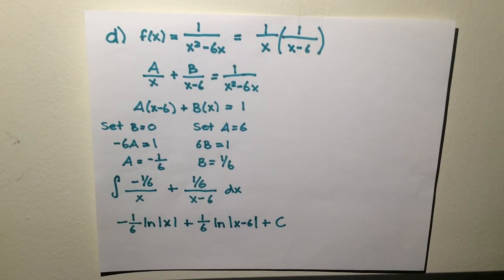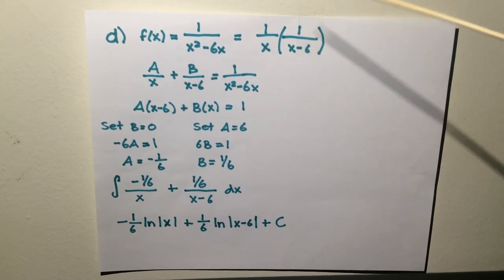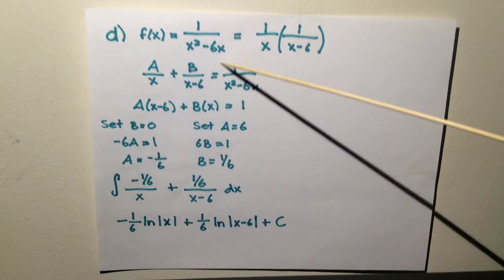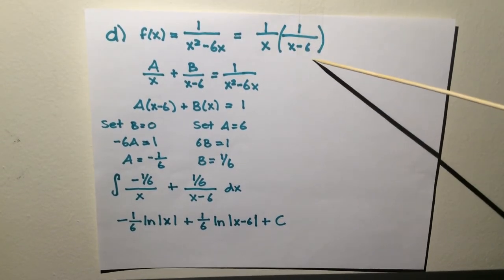For part d, let k equals 6, so that f(x) equals 1 over x squared minus 6x. Find the partial fraction decomposition for the function f. Find the integral of f(x) dx. First, you need to separate x squared minus 6x to 1 over x and 1 over x minus 6.